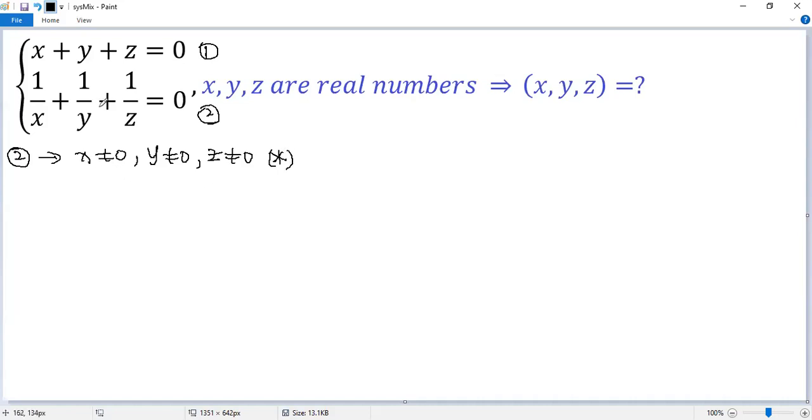We want to eliminate the denominators of equation 2. So both sides multiply by x, y, z. So xyz times 1/x plus 1/y plus 1/z equals xyz times 0.